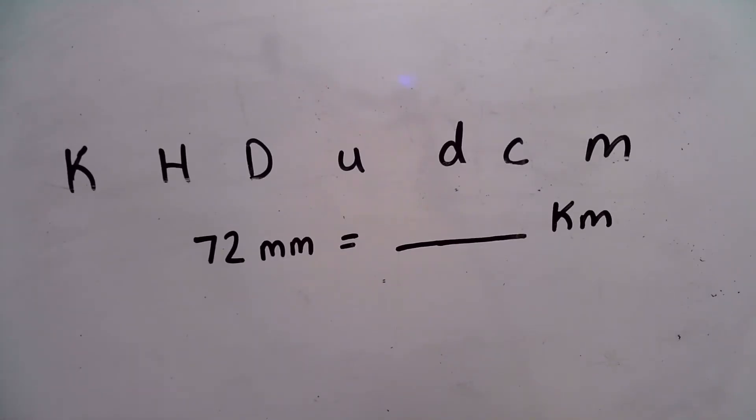Let's start with this problem going from a very small unit to a very large unit. So how many kilometers are equal to 72 millimeters? Well, this is going to end up being a very small number.